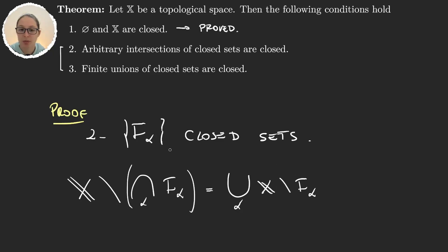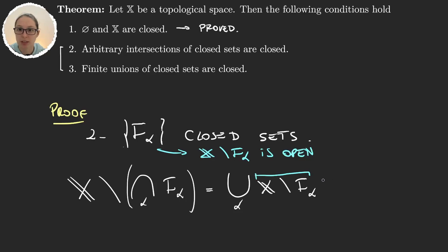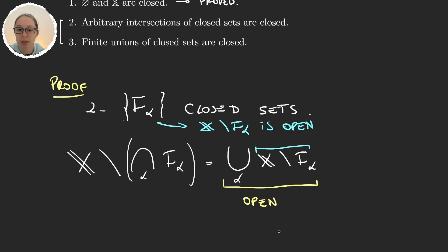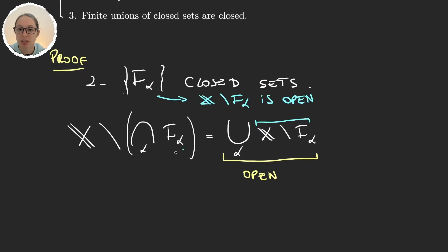But now because each f_alpha was closed, we know that x minus f_alpha is open, and this will happen for every alpha. So these are all open sets and we are taking the arbitrary union of open sets. By the definition of a topology we know that this is open. And so because x minus the intersection is an open set, then the intersection is closed.